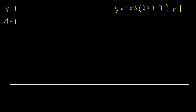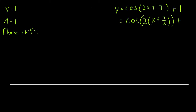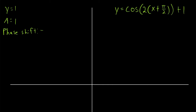Since x has a coefficient of 2, we can't immediately pick out the phase shift. So we factor out a 2: cosine of 2 times (x plus pi over 2), plus 1. Now we can see the phase shift is negative pi over 2. The period p is 2 pi divided by 2, which is pi. And the quarter period q is pi over 4.